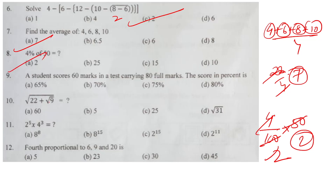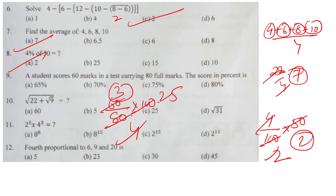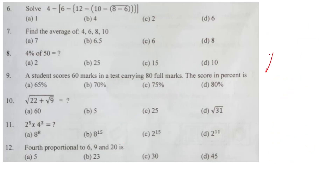Question number 9: a student scored 60 marks in a test carrying full marks of 80. 60 divided by 80 multiplied by 100 — 20 cancels, 4 times, then 3 multiplied by 25 equals 75. 75 is the correct answer.